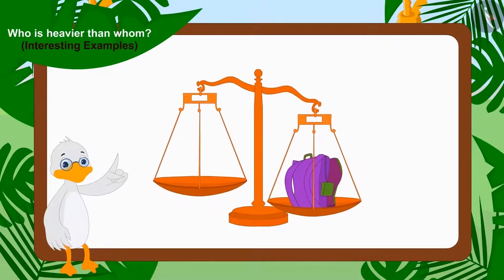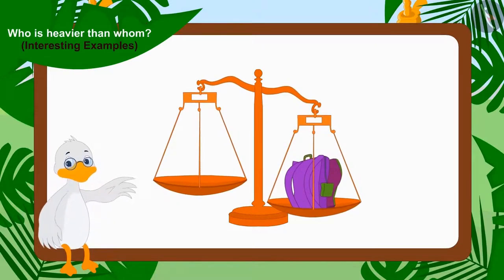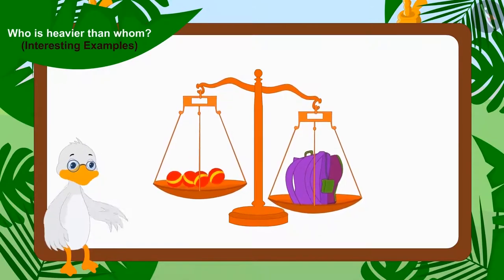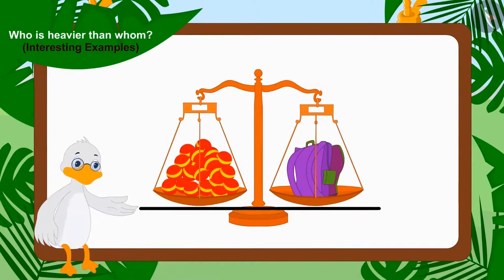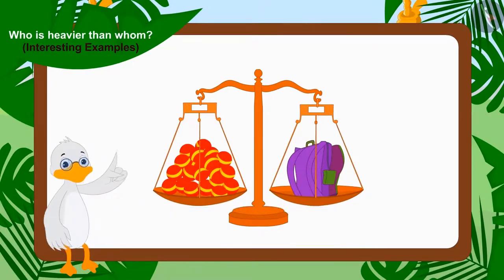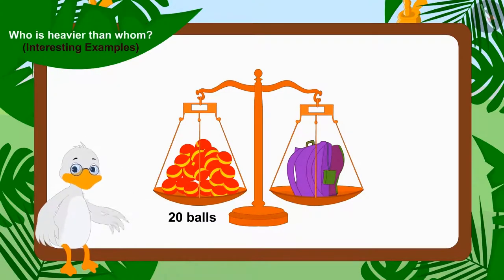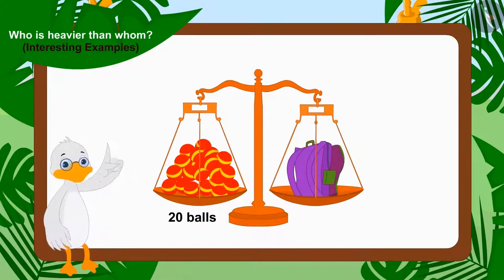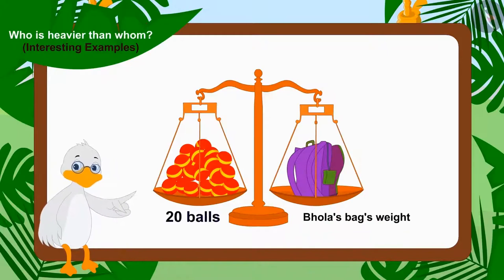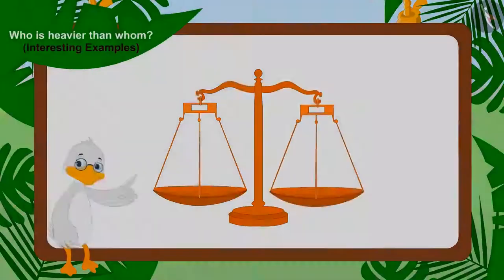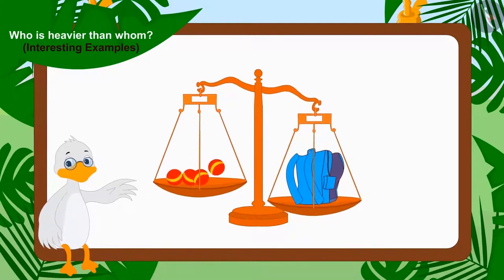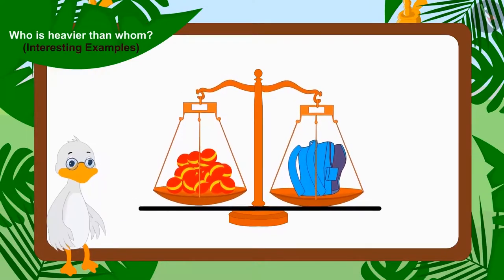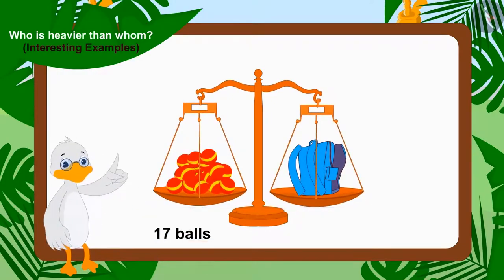Now Uncle removed Sher Khan's bag and the balls. On one side of the scale he kept Bhola's bag and on the other side started placing balls one by one. Once again both plates reached the same level, but this time there were twenty balls in the plate. Then Uncle weighed Golu's bag. When the plate came to the same level, there were seventeen balls in the plate.